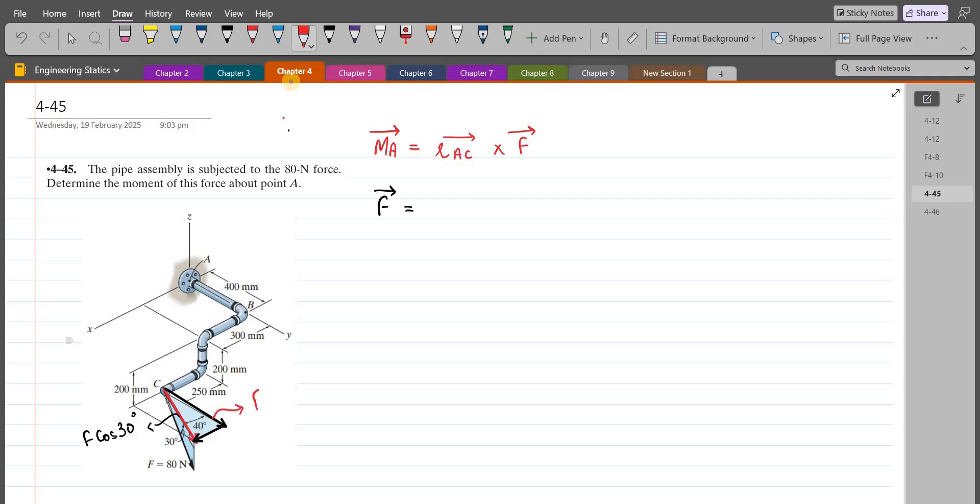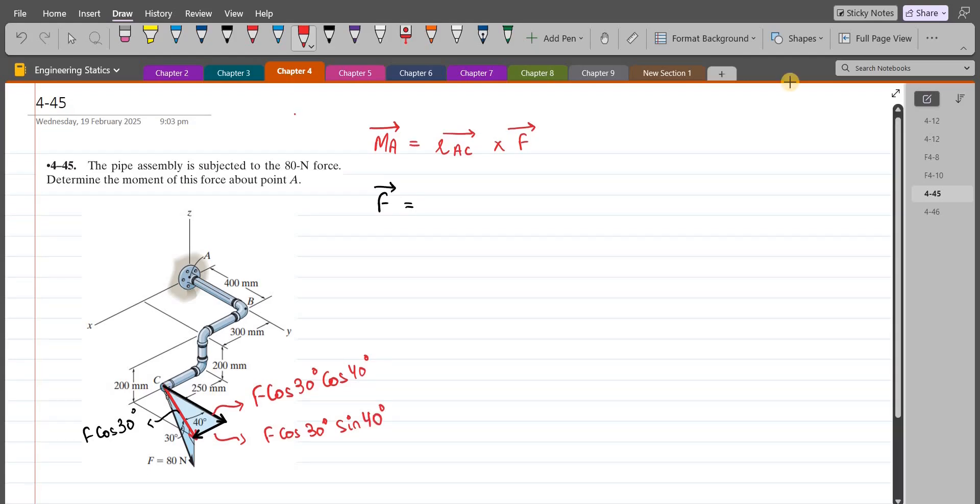This right here is F cos 30 into cos 40, and this is F cos 30 into sin 40. We also have a component in the negative z-axis. So this right here is F sin 30.